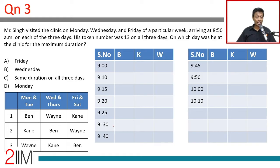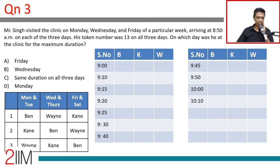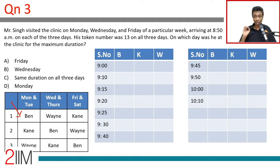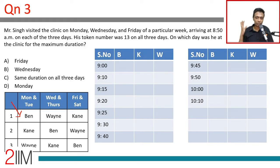Mr. Singh visited the clinic on Monday, Wednesday, and Friday of a particular week, arriving at 8:50am on each of these three days. His token number was 13 on all three days. On which day was he at the clinic for the maximum duration? He arrives at 8:50, which is before the clinic opens at 9 o'clock.